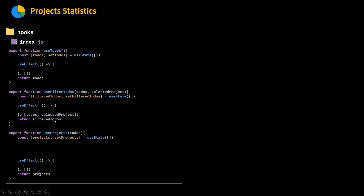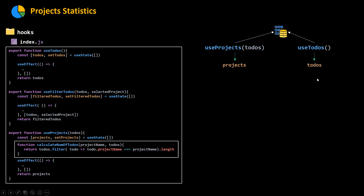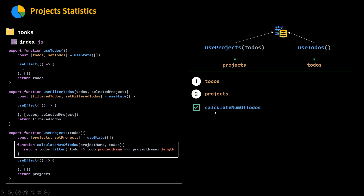The useTodos hook, filterTodos, and useProjects are all custom hooks. When we get our to-dos from Firestore, we pass them as an argument to the useProjects hook, which uses a function to calculate the number of to-dos. But there's something wrong. When we call useProjects, we make a call to Firestore and get our projects. When we call useTodos, we make a call and get our to-dos array. Now we have two cases — if we get the to-dos first and pass them to useProjects, the number of to-dos will be calculated just fine.